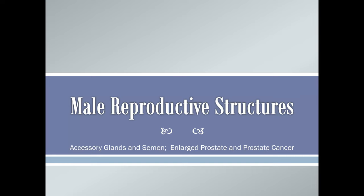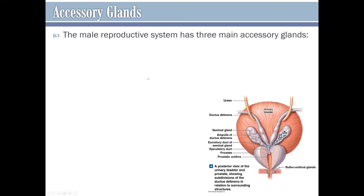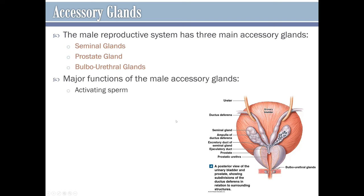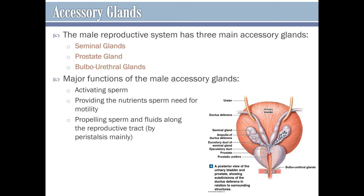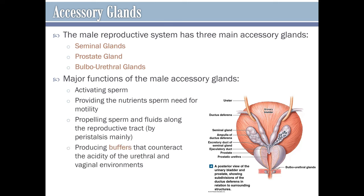The male reproductive system has three main accessory glands: the seminal glands, the prostate gland, and the bulbourethral glands. The major functions of these accessory glands are to secrete chemicals that activate sperm, provide nutrients for sperm motility, propel sperm and fluids along the reproductive tract mainly by peristalsis, and produce buffers that counteract the acidity of both the male urethra and the female vagina.